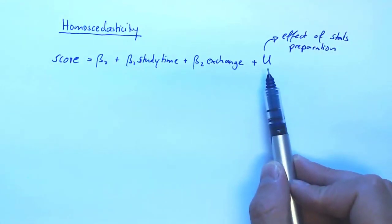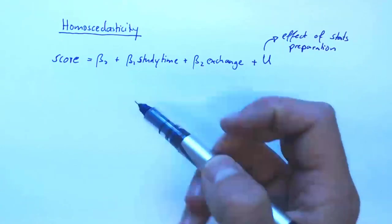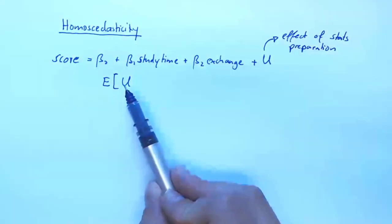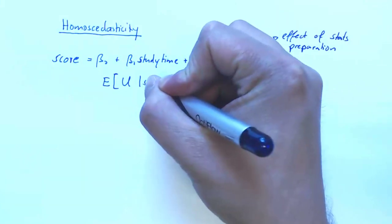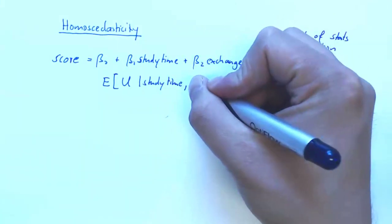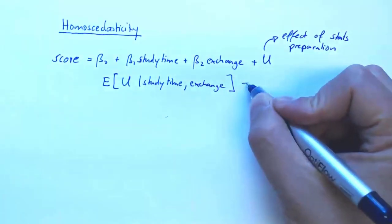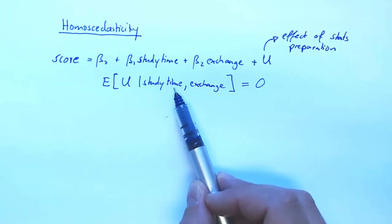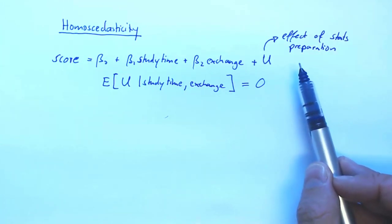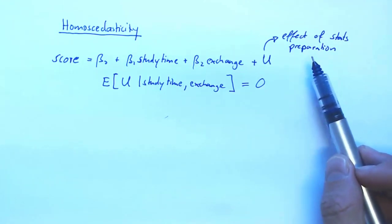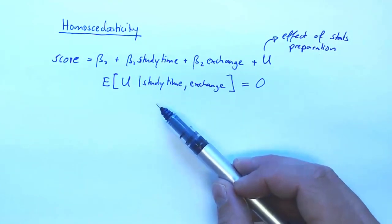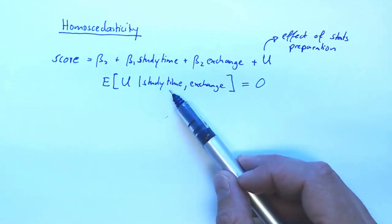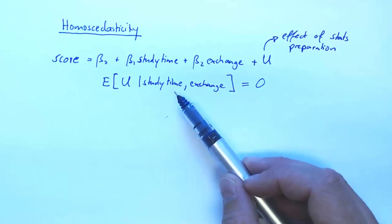Now, if we want to estimate this kind of linear regression model by OLS we will need an exogeneity assumption. So we shouldn't be able to predict U by observing study time and exchange. So how about observing study time? Well, we just assume that students are not strategically choosing their study time and that if they know that they have very low stats preparation, then they will not make up by studying more. So in that way, by observing someone's study time, we cannot know how many statistics courses they have taken previously. That's a very unrealistic assumption, but it will do for the purpose of this example.